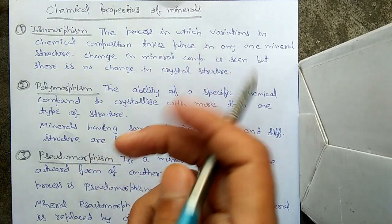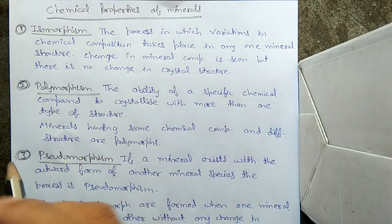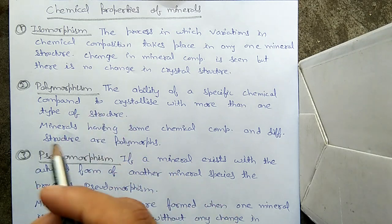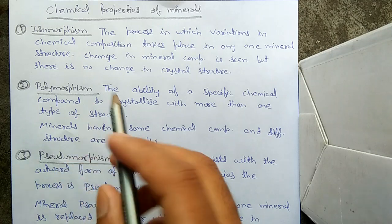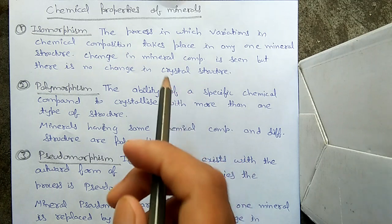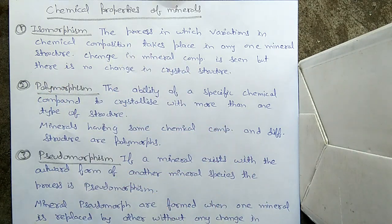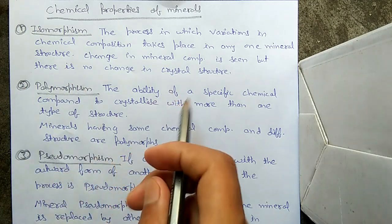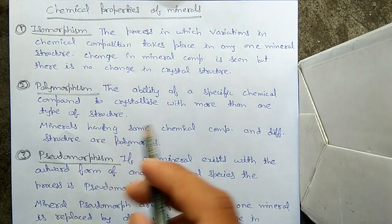So what is isomorphism? It is a process in which variation in the chemical composition takes place in any one mineral structure. In this process, the chemical composition of the mineral changes, but there is no change in the crystal structure. So isomorphism involves a variation or change in the chemical composition of a mineral but no change in the crystal structure.